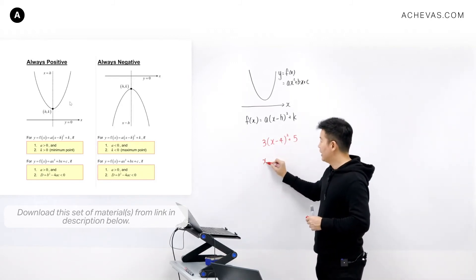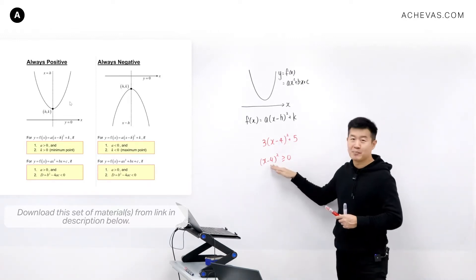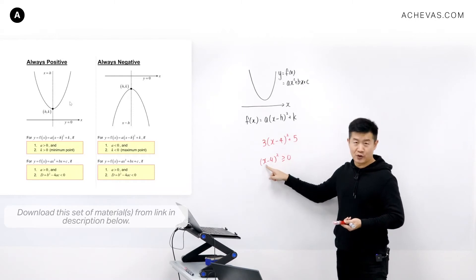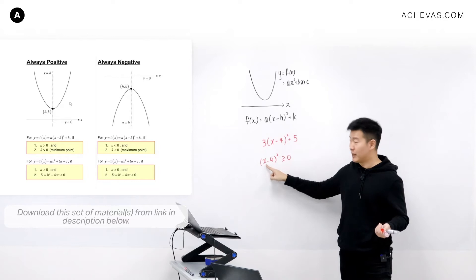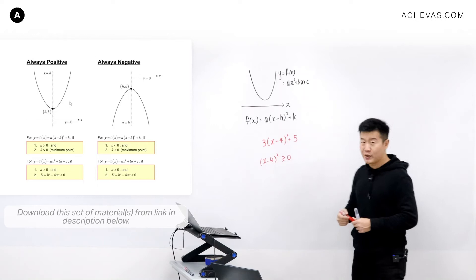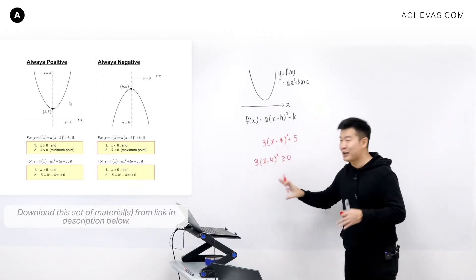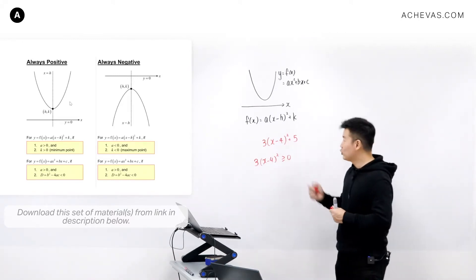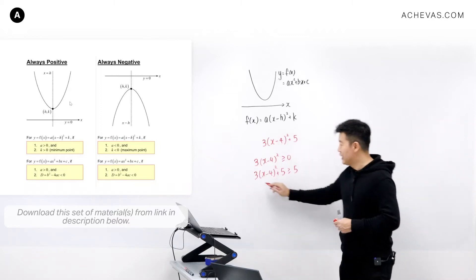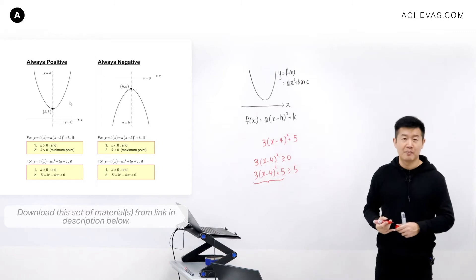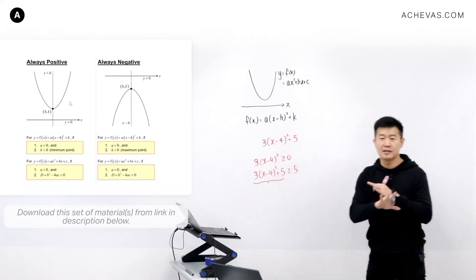Because (x minus 4) squared is always bigger than or equal to 0, regardless of the value of x. It equals 0 only when x equals 4; for any other value of x, the squared term is always positive — even if x is minus 1, giving (minus 1 minus 4) squared equals 25. Multiplying by 3 keeps it bigger than or equal to 0. Adding 5 means the expression is always bigger than or equal to 5, and since 5 is always bigger than 0, the expression is always positive.